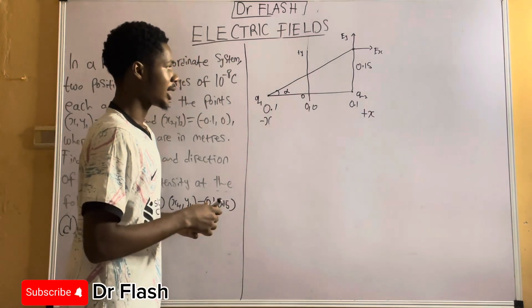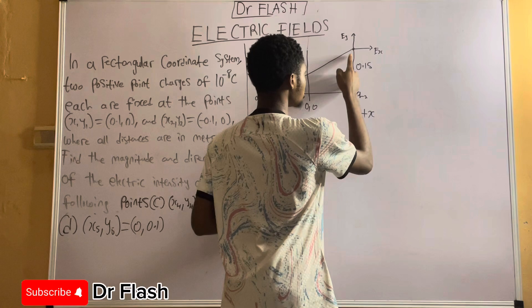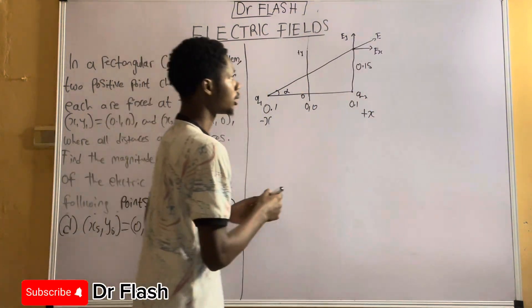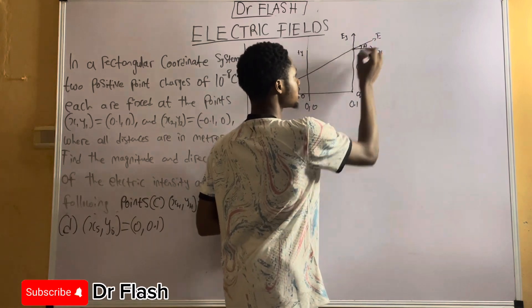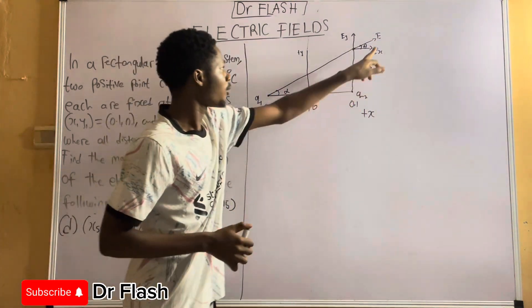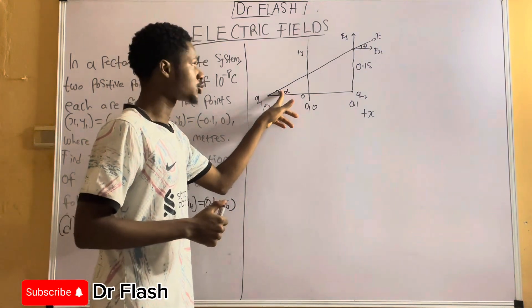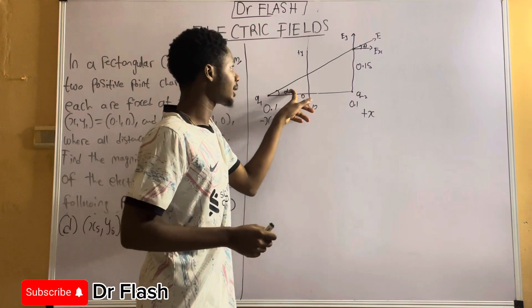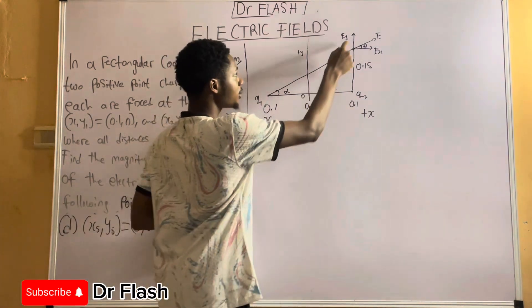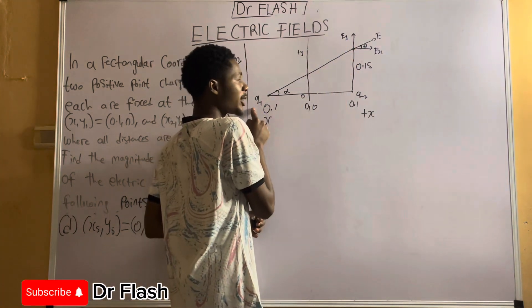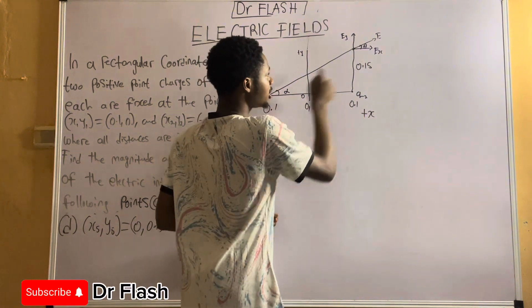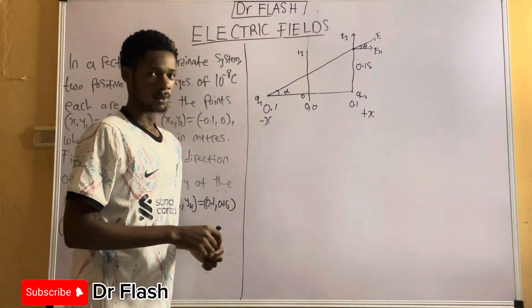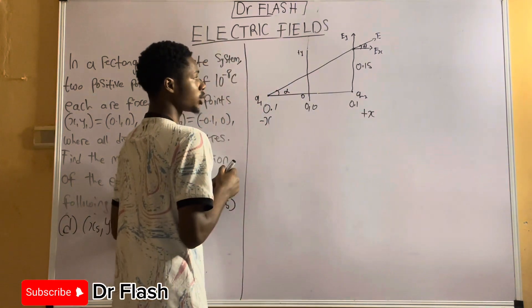At the point we're going to have the resultant electric field intensity. I'll call the horizontal component Ex and the vertical component Ey. The net electric field will be E, having an angle theta. Note that theta is not equal to alpha — this is because Ey depends on both charge q1 and charge q2, while Ex only depends on charge q1.